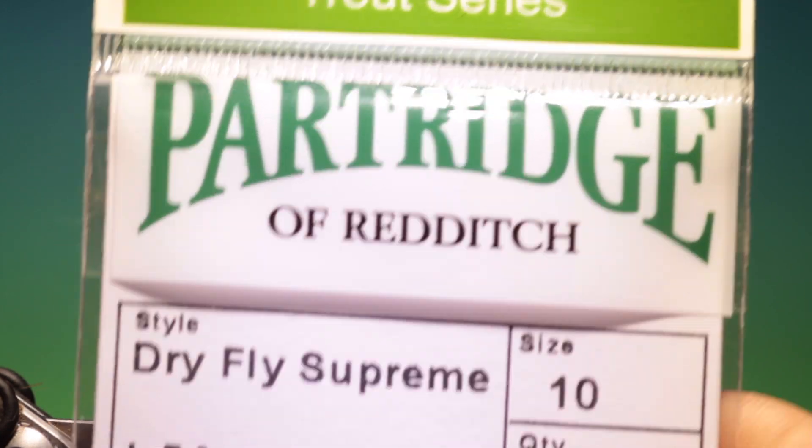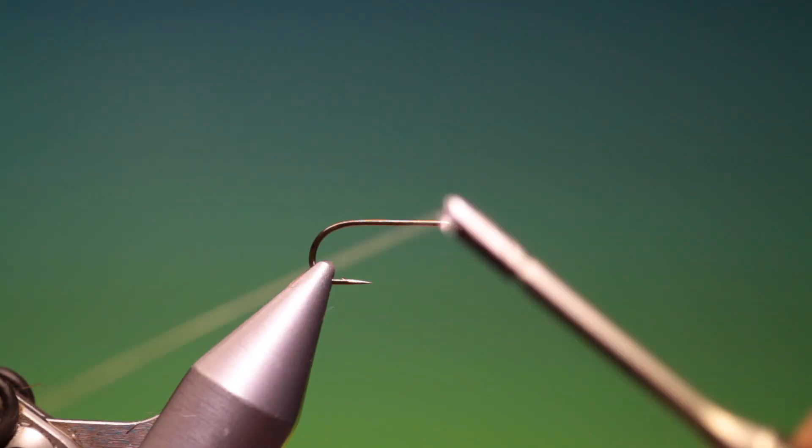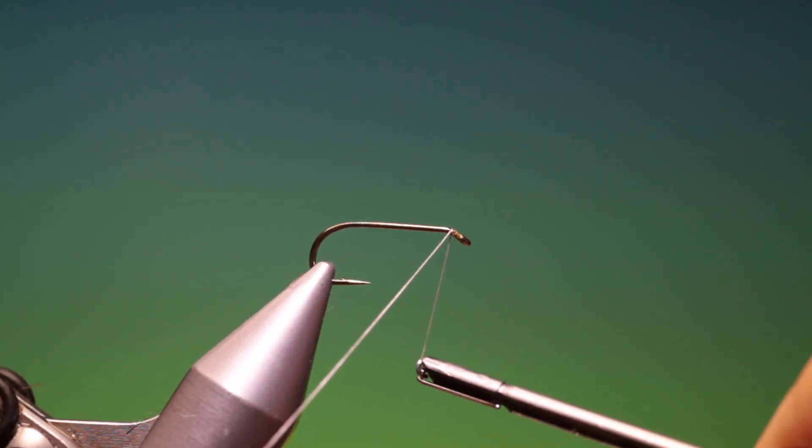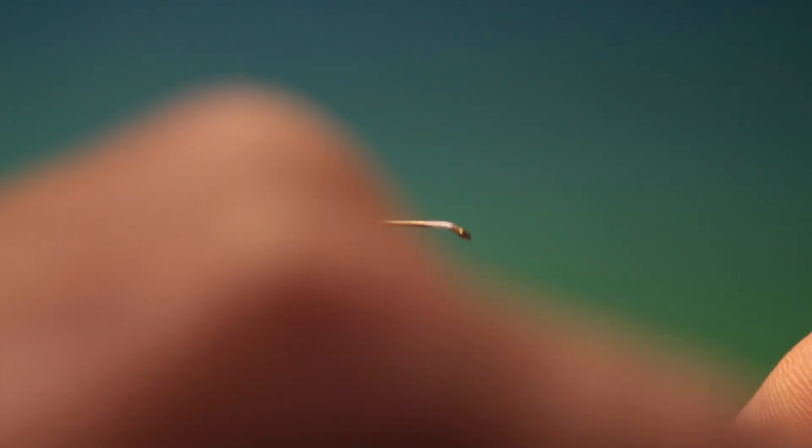We'll start with the Partridge Dry Fly Supreme size 10. This is Shear 14 Ault, we'll just attach a little of that at the front there.